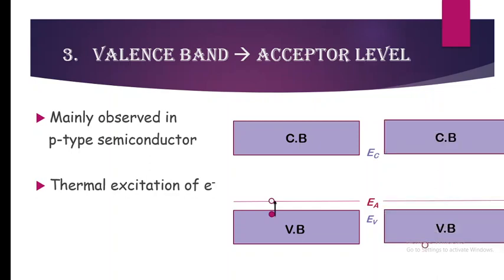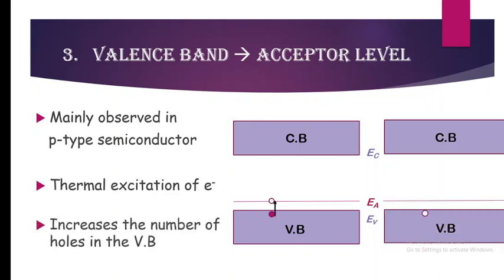This type of transition gives more holes in the valence band, because the electron going to the acceptor level leaves behind a hole. A hole is created in the valence band and it contributes to electrical conductivity.